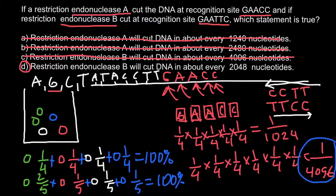Once again, I want you to pay attention that in most such problems the correct answer would be 1/4,096, because most restriction endonuclease recognition sites are palindromic. This is all for today, thank you for your attention. Please subscribe for my new videos that I post almost every day, thumbs up if you liked this video, write your comments and questions if you have any, and see you in the next video. Goodbye.